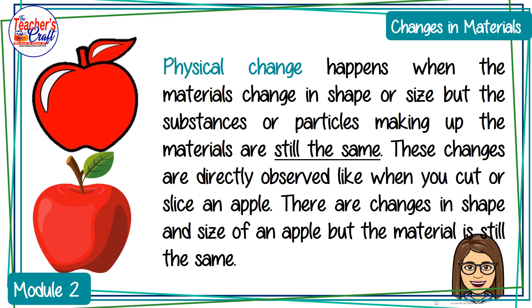Physical change happens when materials change in shape or size, but the substances or particles making up the materials are still the same. These changes are directly observed — like when you cut or slice an apple, there are changes in shape and size, but the material is still the same.